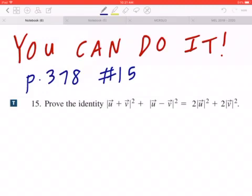Hi everyone, let's take a look at number 15 on page 378. Prove that the magnitude of vector u plus vector v quantity squared plus the magnitude of vector u minus vector v quantity squared equals 2 times the magnitude of vector u squared plus 2 times the magnitude of vector v squared.